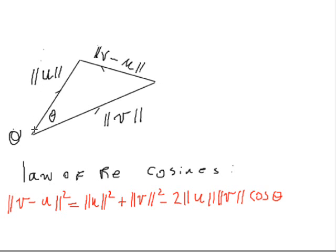Now the norm of u gives us the length from the origin to this terminal point here. The norm of v gives us the length from the origin to this terminal point here. And then, of course, the norm of v minus u gives us the length from here to here.